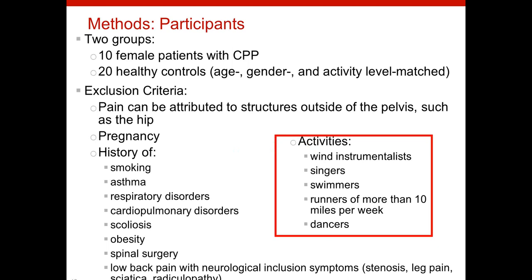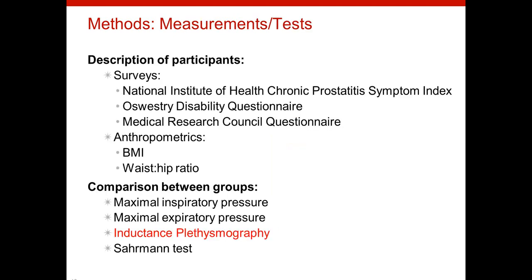Our goal was to recruit 10 female patients with chronic pelvic pain and 20 healthy controls so that we could match them by age and activity level. We had a large list of exclusion criteria, including other diagnoses that might refer pain to the pelvis or negatively affect breathing, such as pregnancy or history of asthma. We also excluded those who participated in activities that would make them exceptional breathers, such as playing a wind instrument or running. This is the full list of tests and measurements we planned to take. The measure in red, Inductance Plethysmography, is what we measured using the BioRadio.